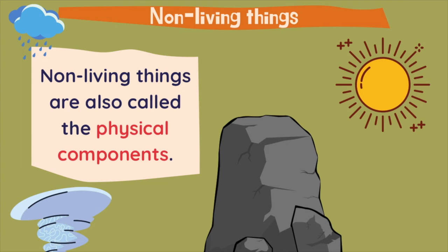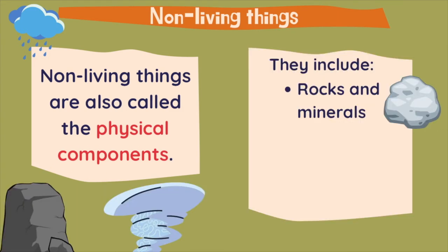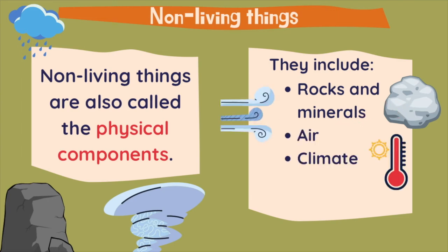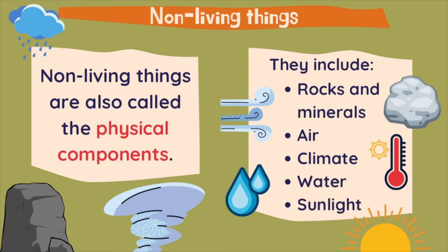The non-living things of the ecosystems are also called the physical components. The physical components include rocks and minerals, the air, the climate or the temperature, water, and the sunlight.